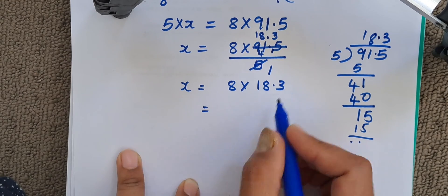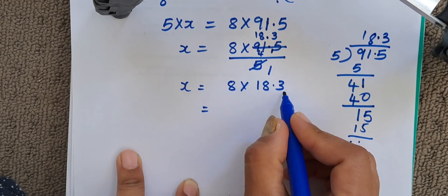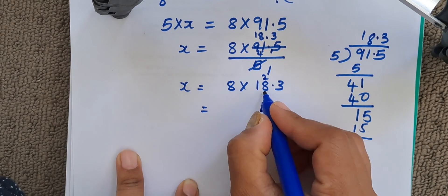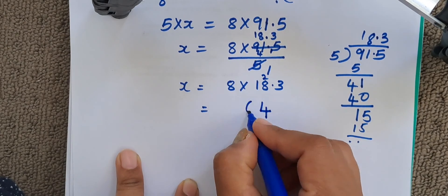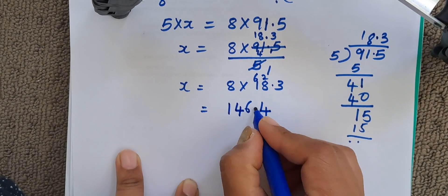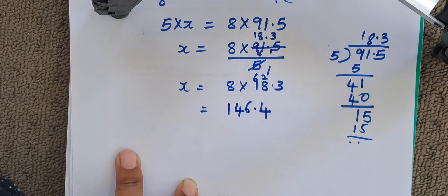Now we will multiply 8 into 18.3. 8 1s are 8, 8 2s are 16, carry 6. 24. 8 times 8 is 64, 66. 8 1s are 8, 14. So it is 146.4.